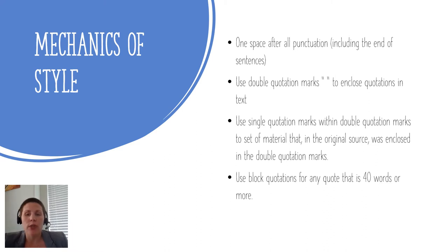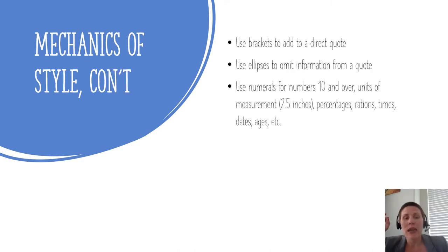Use block quotations for any quote that is 40 words or more. For block quotes, do not use quotation marks to enclose the block quote, but keep any quotation marks from the original source material. If you're adding content to a direct quote or enclosing parenthetical material already within a parenthesis, use brackets. If you need to remove information from a quote, use ellipses. It's very important not to change the meaning of the original work when using brackets or ellipses.